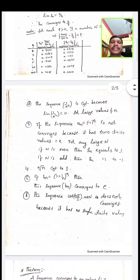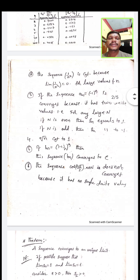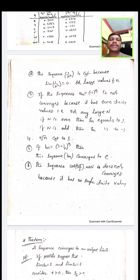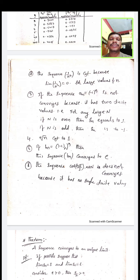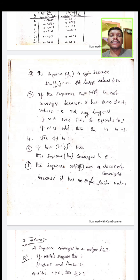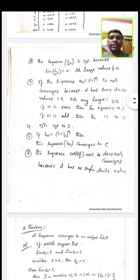Another example: the sequence 1/N² is convergent because the limit of 1/N² is 0. For large values of N, 1/N² becomes 0, which is a finite value. Therefore, the sequence got some finite value and this is a convergent sequence.